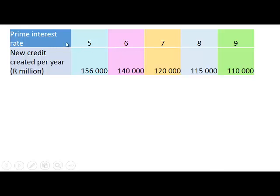Here we have a table that shows the different levels of prime interest rate: 5%, 6%, 7%, 8%, 9%, and the corresponding new credit created per year at each level. When the prime interest rate was 5%, 156,000,000,000 rand worth of new credit was created. When it increased to 6%, 140,000,000,000 rand of new credit was created.